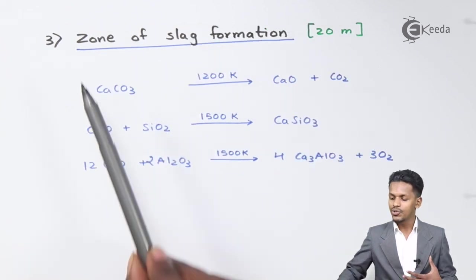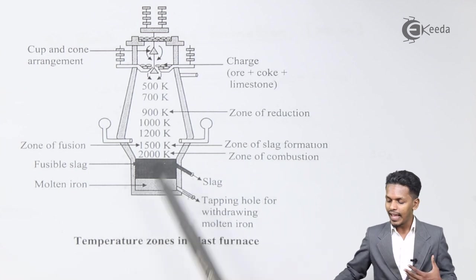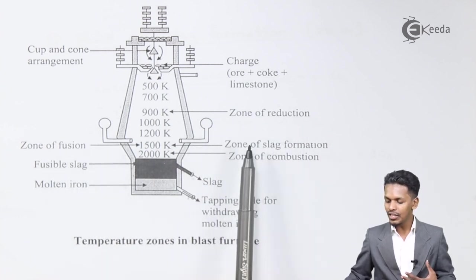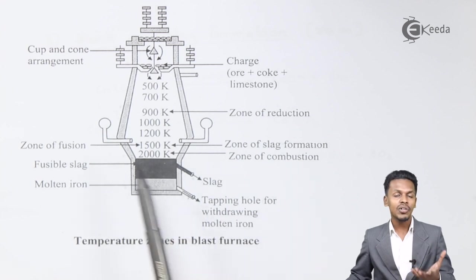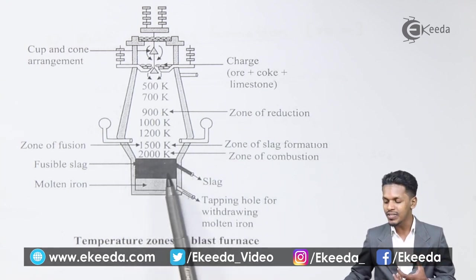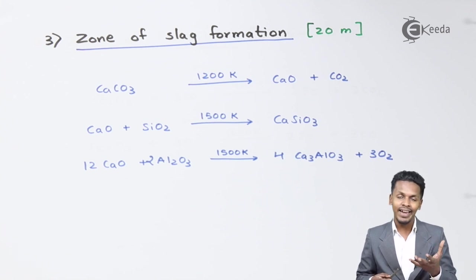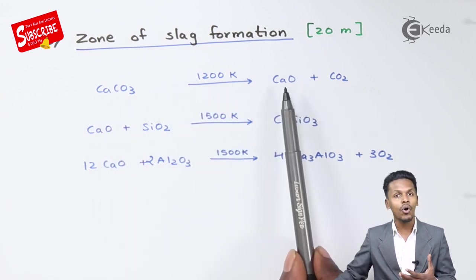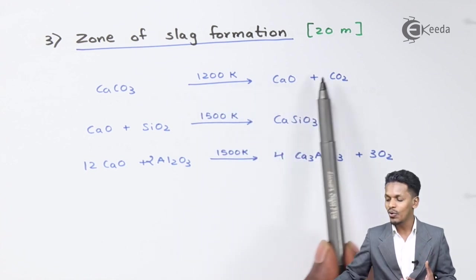The next zone is the zone of slag formation, which takes place at a height of around 20 meters, at approximately 1500 Kelvin. Limestone — CaCO3 — is added to the blast furnace, and at 1200 Kelvin it decomposes to form CaO along with carbon dioxide.